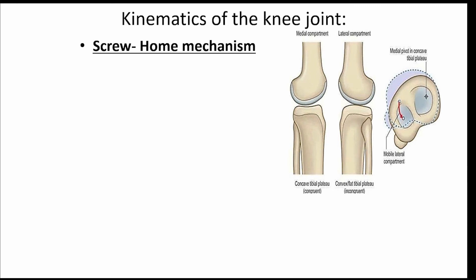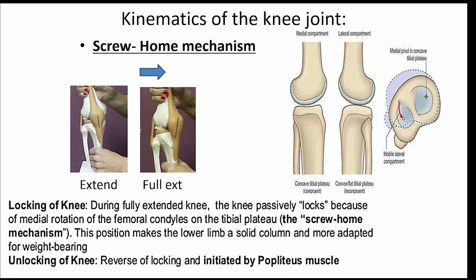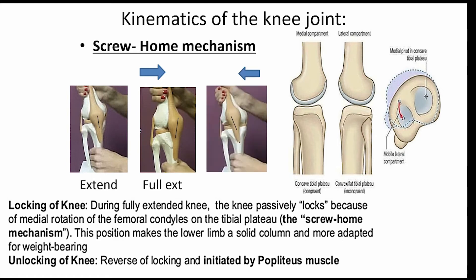The same principle of pivoting of the medial side and sliding of the lateral side accounts for the screw-home mechanism, allowing for internal rotation of the lateral condyle during full extension, locking the knee in a solid column. The reverse occurs with unlocking of the joint by external rotation of the femur through the action of the popliteus tendon.